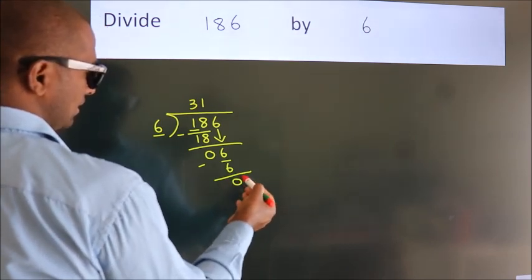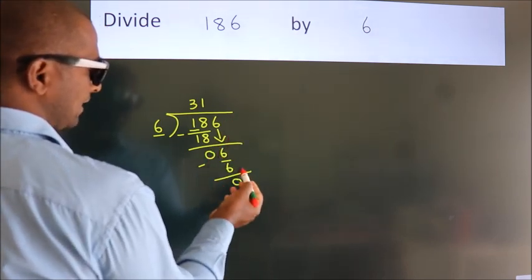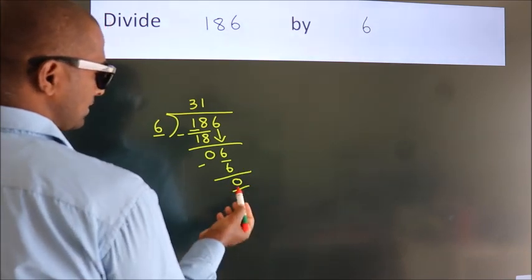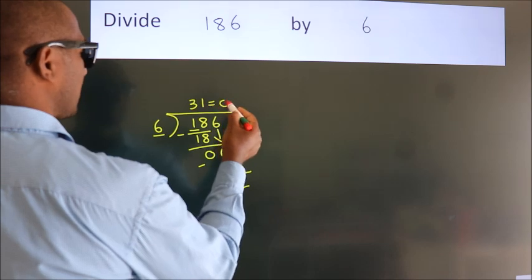After this, no more numbers to bring down. And we got remainder 0. So this is our quotient.